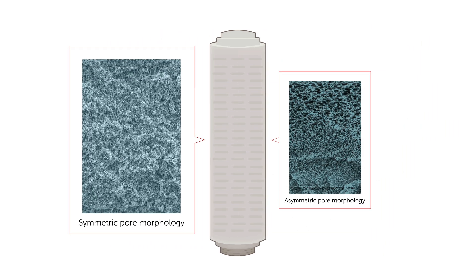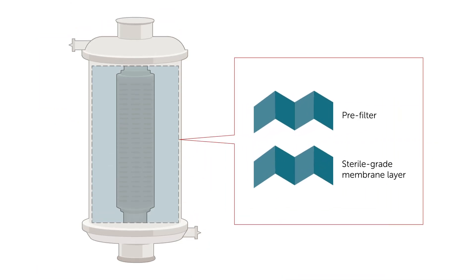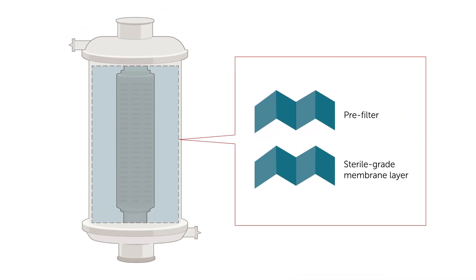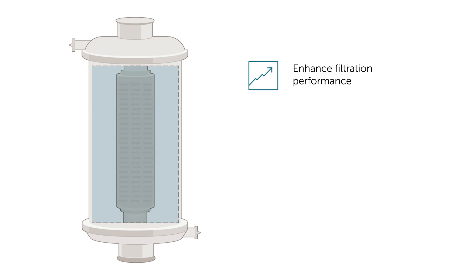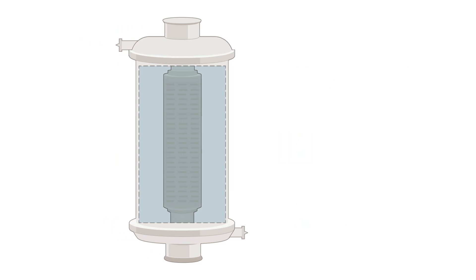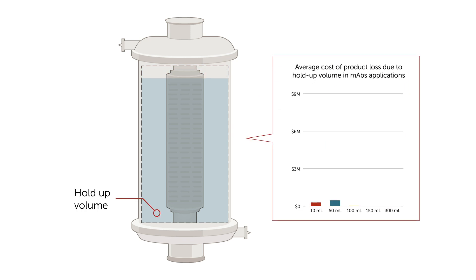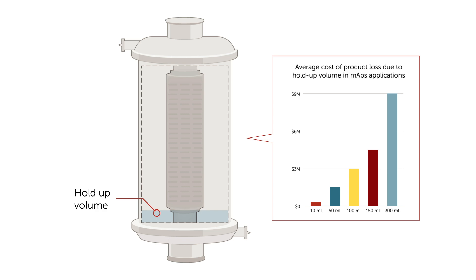The choice of membrane structures and pore morphologies will influence filtration performance. Using different pre-filter and final membrane configurations can enhance filtration performance, increase throughput, and expand a filter's lifetime. Optimal filter configurations and designs can also reduce upstream hold-up volume to maximize product recovery and yield.